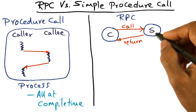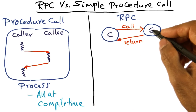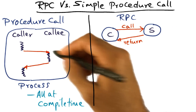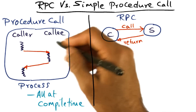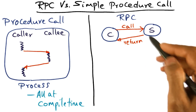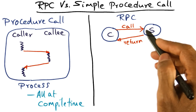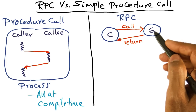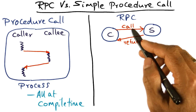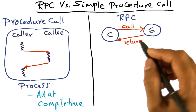Now let's see what happens with remote procedure call. In principle, a remote procedure call looks exactly like this picture — you have a caller and a callee. The caller makes a call, executes a procedure, and returns. That's what is going on in a remote procedure call.